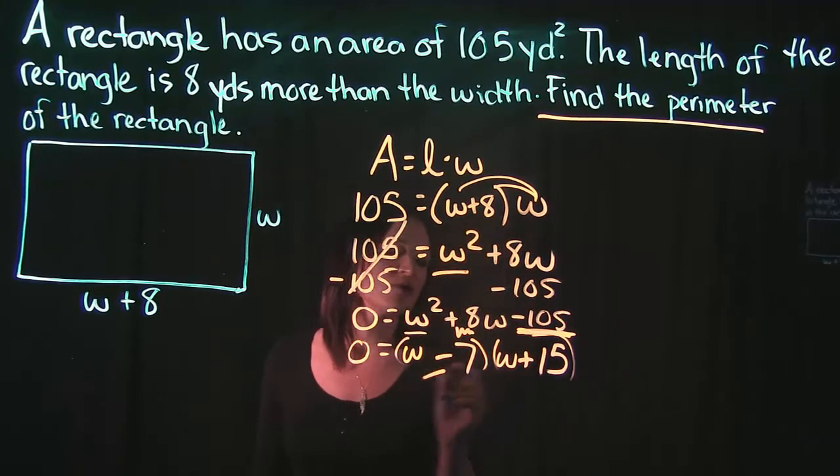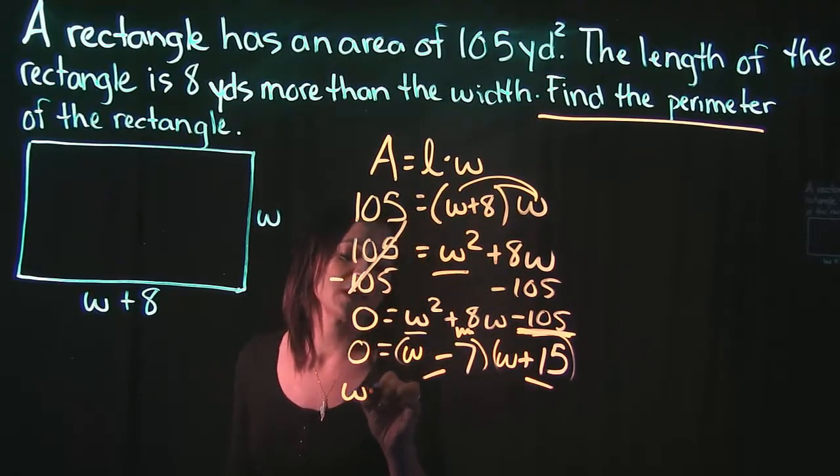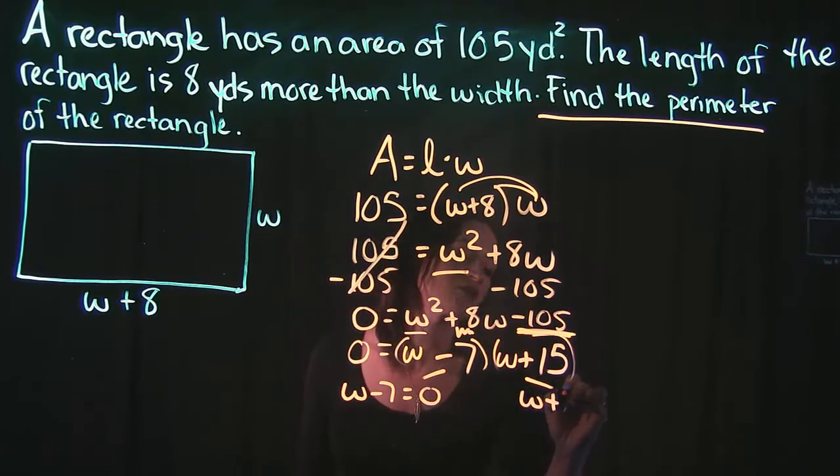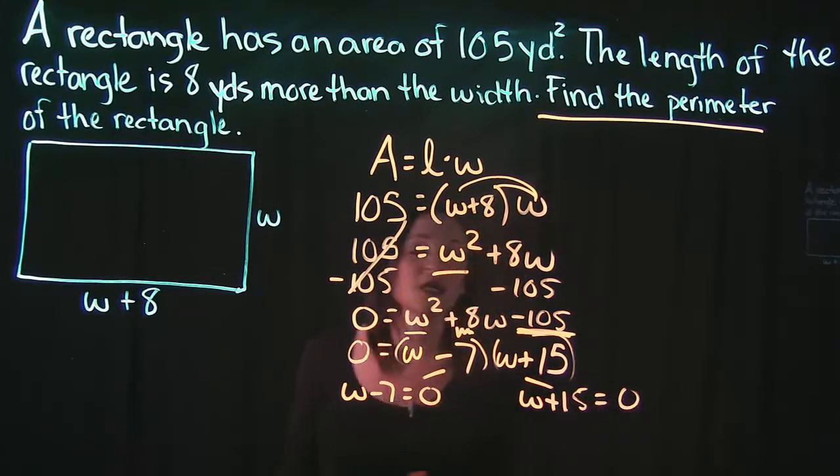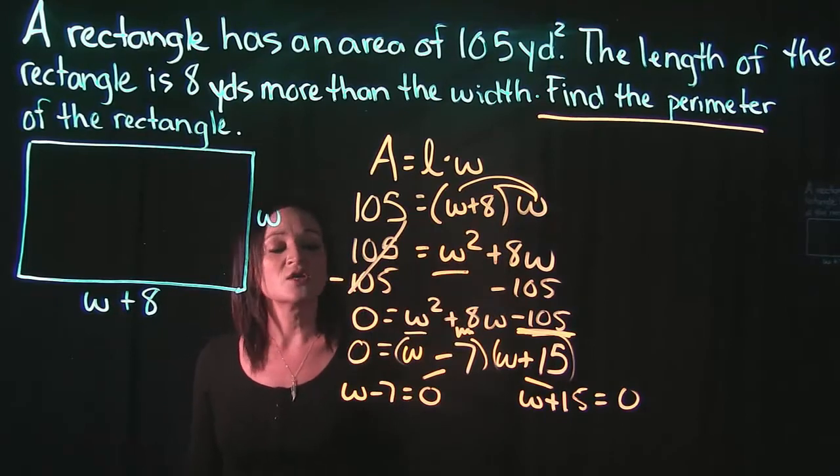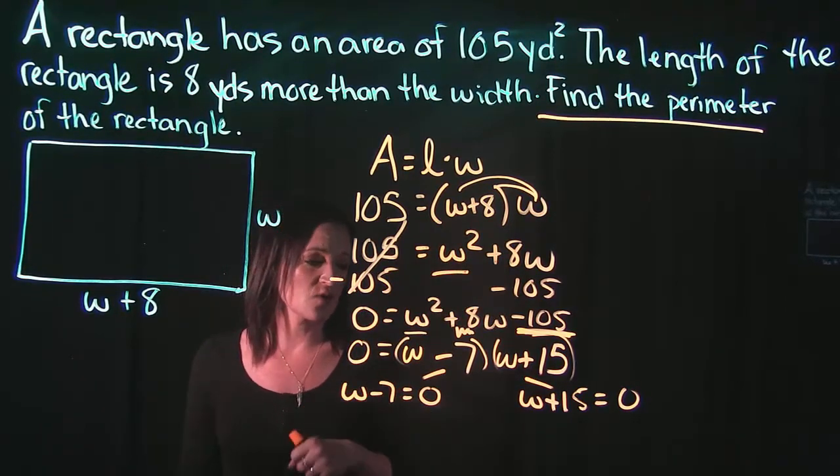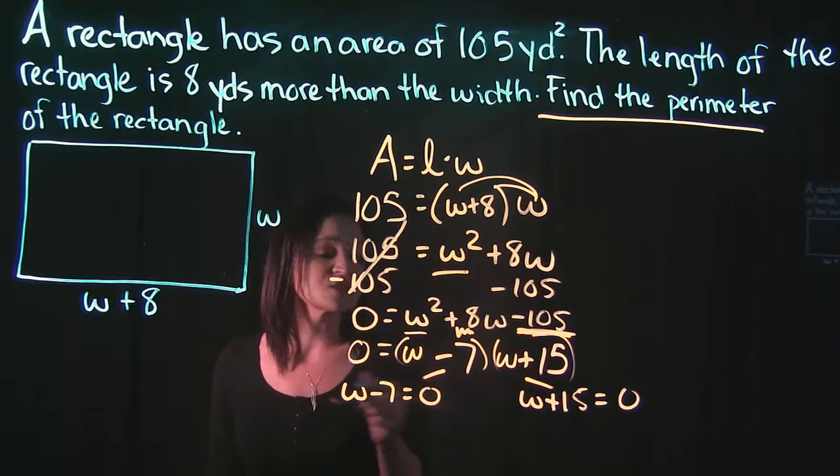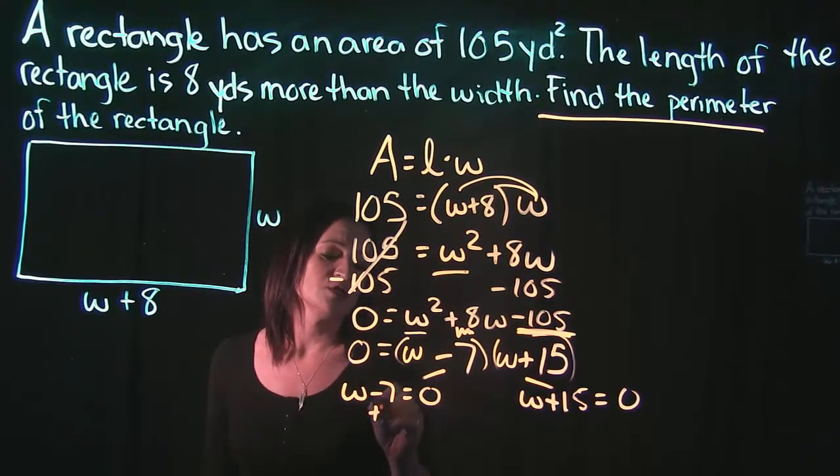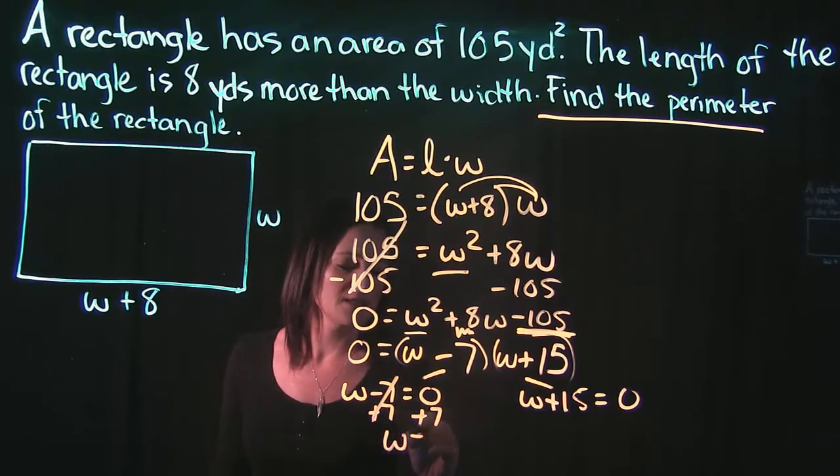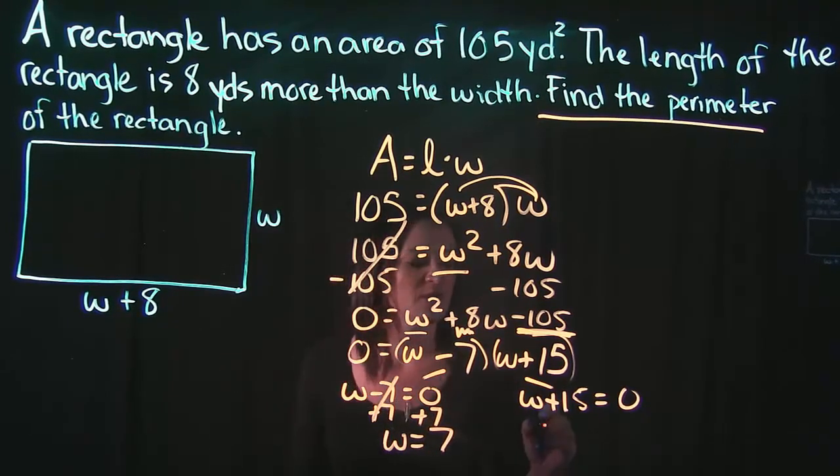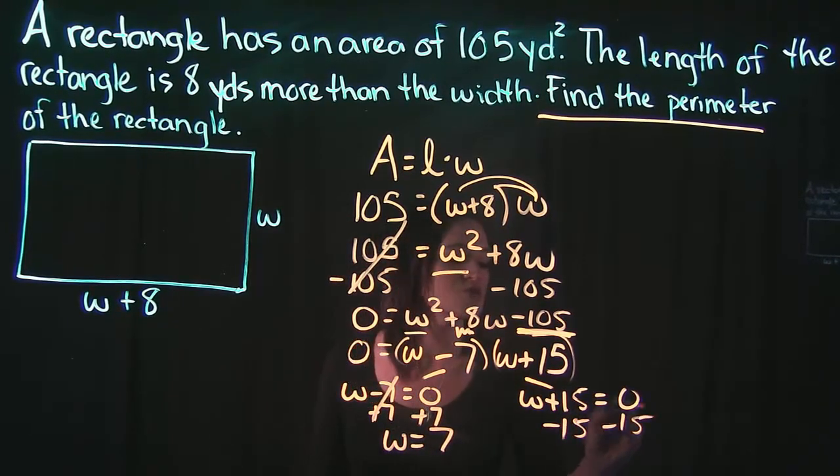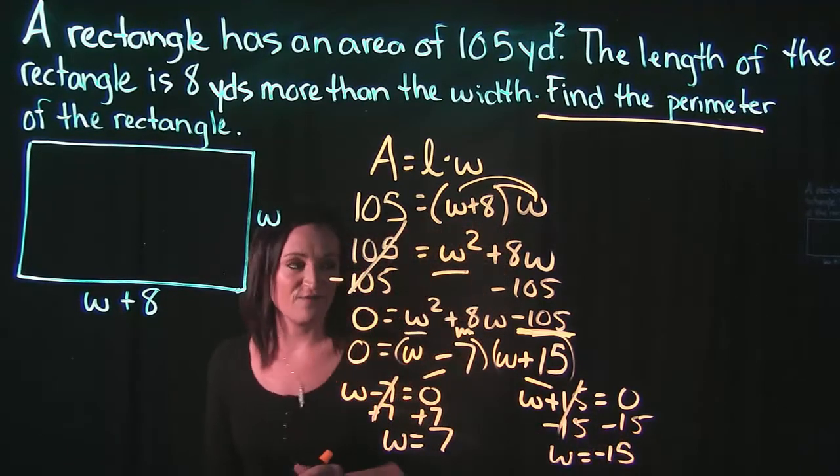At this point we use the zero factor property that tells us we can split each factor up and set them each equal to 0 and solve. We take W minus 7, set it equal to 0. W plus 15, set it equal to 0. For the first one we add 7 to both sides giving us W equals 7. For the other one we subtract 15 to get W equals negative 15.